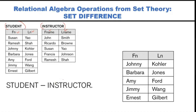Now let's understand the query 'student minus instructor' and its meaning in plain English. This query will not give any error because they are type compatible. To evaluate this query, you start from the first relation, which is the student relation.